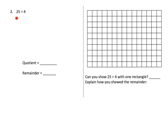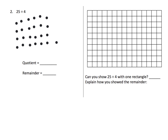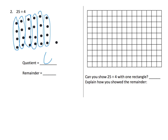Same concept, only now our first number is 25 instead of 24. Parents and teachers, your students might automatically be able to say we're going to have a remainder of 1 because our previous problem used 24 dots and had no remainder. But let's do it anyway. The fact that this says divide by 4 means each of our columns is going to have 4 dots. Counting up to 25 gives us 6 groups with a quotient of 6 and a remainder of 1. So 25 divided by 4 is 6 with remainder 1.